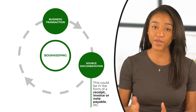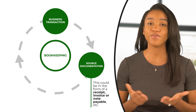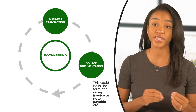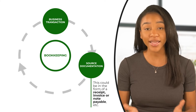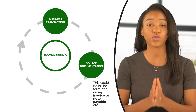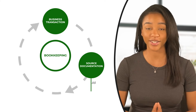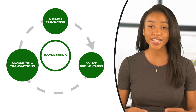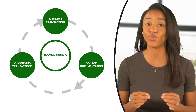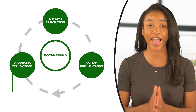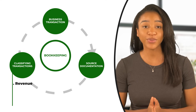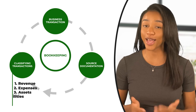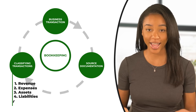But if you're like most business owners, you might find it difficult to keep up with every little receipt, so having your monthly bank statement is a great alternative. The next part of the bookkeeping cycle is classifying your transactions into one of five categories: the first being revenue, second expenses, assets, liabilities, and equity.